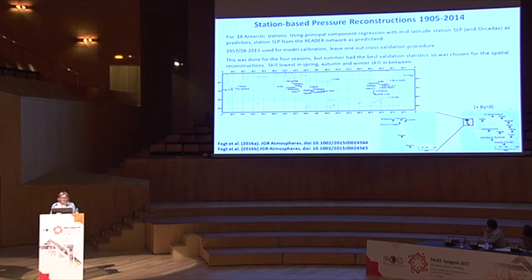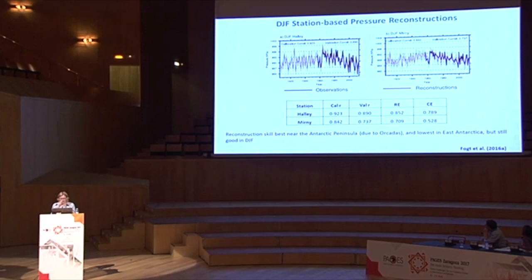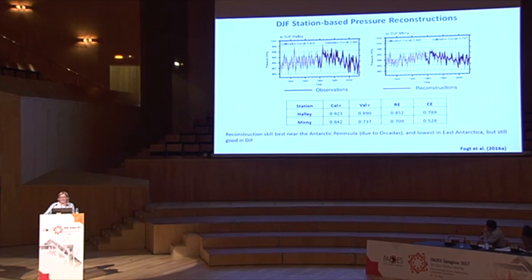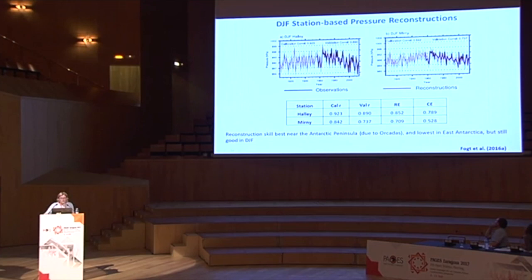To give an example of reconstruction quality in summer: the observed pressure is shown in black, the reconstructed pressure in red, and 95% confidence intervals in grey. Using a leave-one-out cross-validation procedure, calibration and validation correlations are very good - for example at Halley and Mawson stations. Reconstruction skill is best near the Antarctic Peninsula, perhaps because of the proximity of Orcadas, and lowest in East Antarctica, though still quite good in summer.